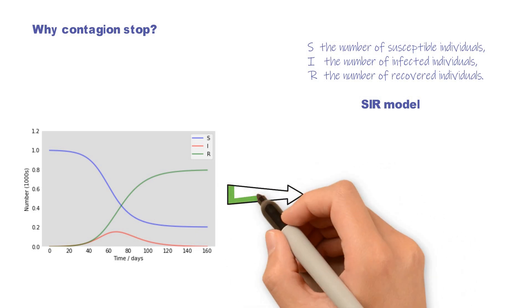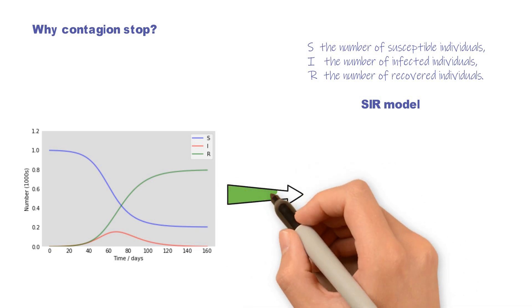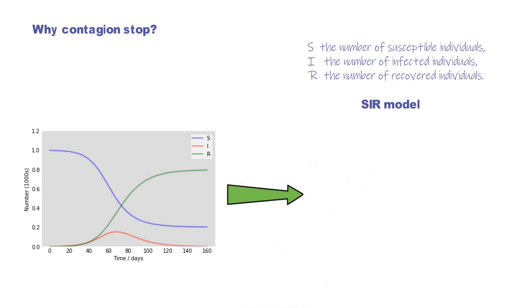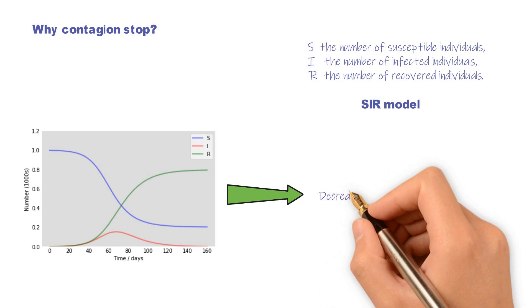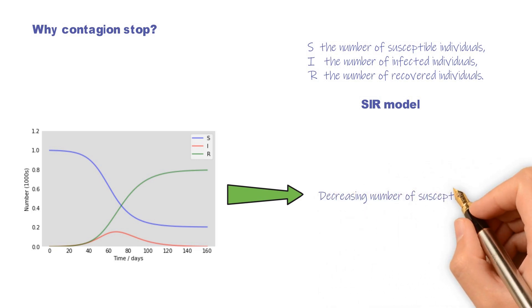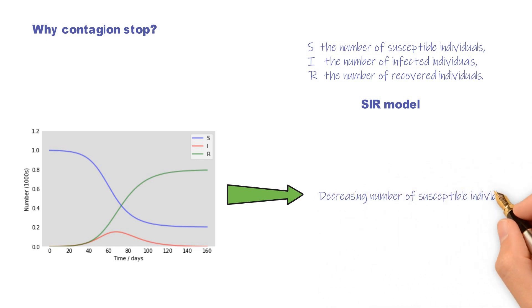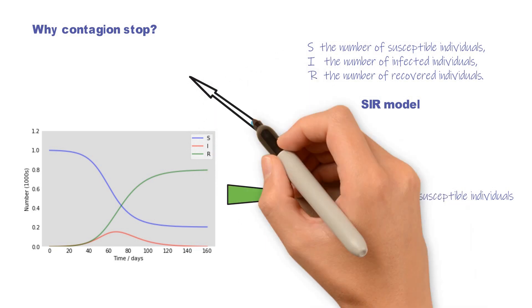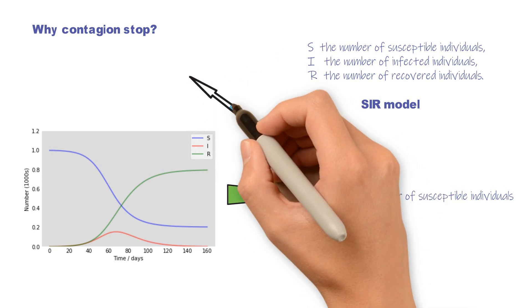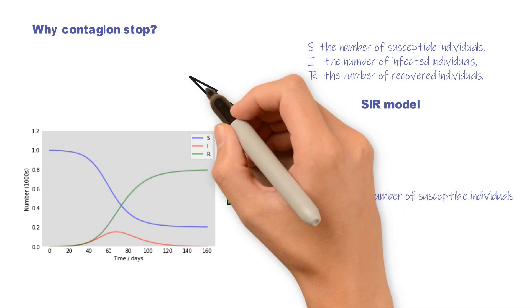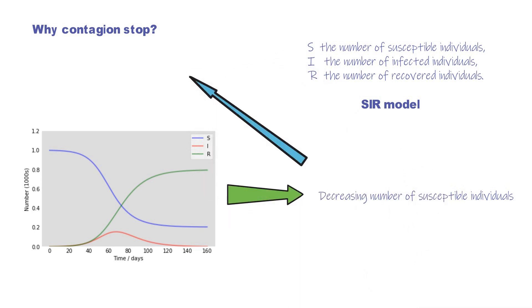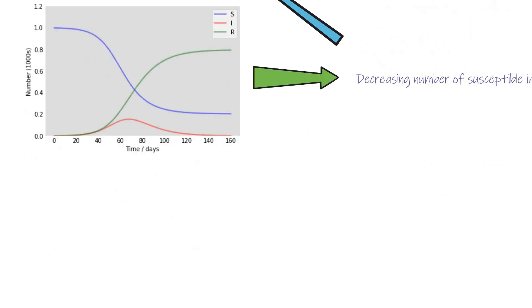Applying the model leads to the conclusion that the decreasing number of susceptible individuals is the reason the outbreak stops. The outbreak will stop before all susceptible individuals are infected. You may have heard of herd immunity a lot these days — that is where it comes from.